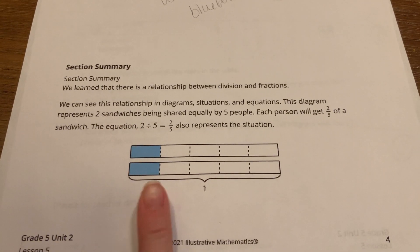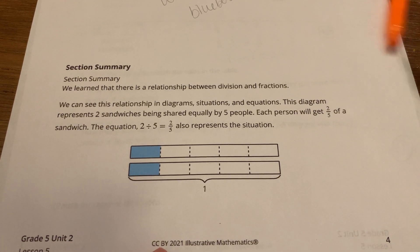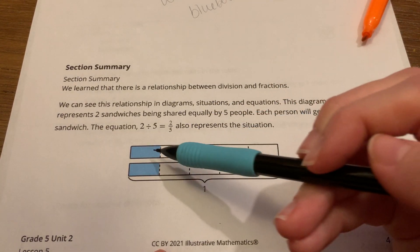This diagram here represents two sandwiches being shared equally by five people. So as you can see here, two whole sandwiches being shared by five people.